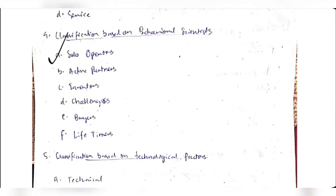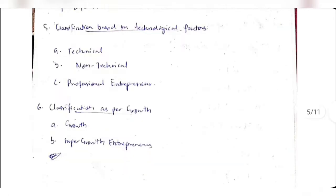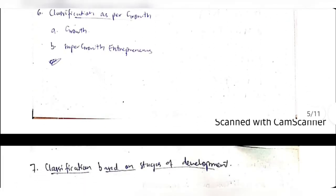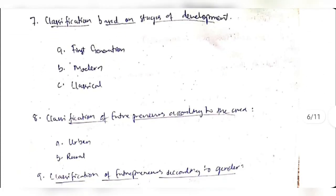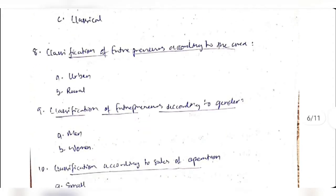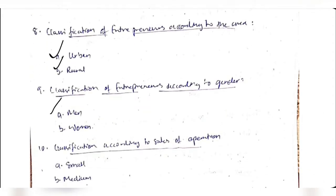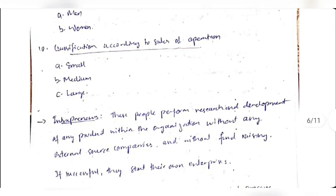Based on type of business: manufacturing, wholesaling, retailing, or service. Based on behavior: solo entrepreneur, active inventors, challengers, buyers, or lifetimers. Based on technological factors: technical entrepreneur, non-technical entrepreneur, or professional (both technical and non-technical). Based on growth: normal growth or super growth entrepreneur who brings very innovative ideas. Based on development stage: first generation (new, small investment with risk), modern, and classical entrepreneurs who slowly bring more profit without sudden change. Also classified by area (urban/rural), gender (men/women), and scale of operation (small, medium, or large).